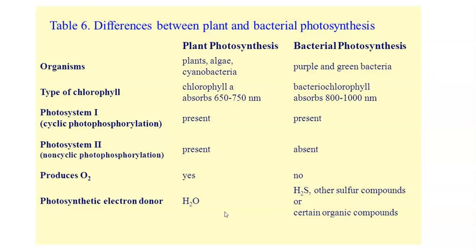Next, we try to understand the differences between oxygenic and anoxygenic photosynthesis. Oxygenic photosynthesis is referred to here as plant photosynthesis. The organisms in which oxygenic photosynthesis is commonly noticed are plants, algae, and cyanobacteria. Whereas anoxygenic photosynthesis is noticed in purple and green sulfur bacteria. Regarding the type of chlorophyll involved: in oxygenic photosynthesis, it is chlorophyll A alone that absorbs sunlight at 650 to 750 nanometers, whereas bacterial chlorophyll has a wider wavelength of absorption between 800 to 1000 nanometers.